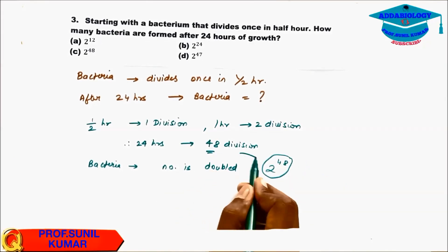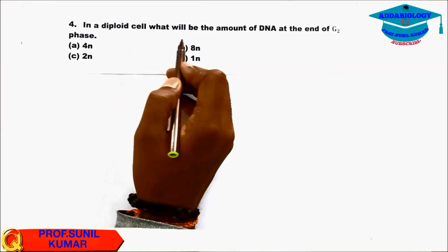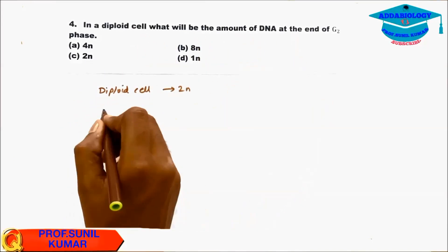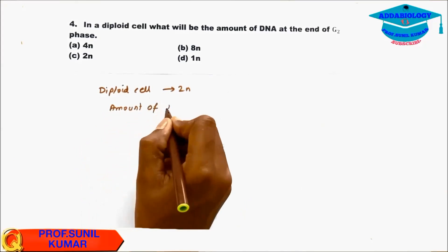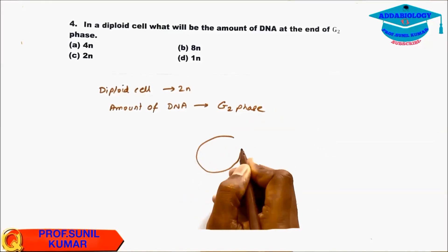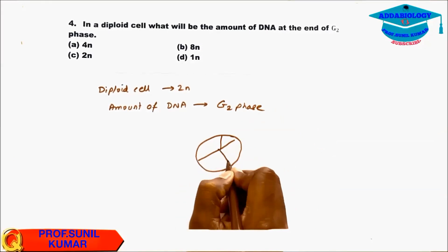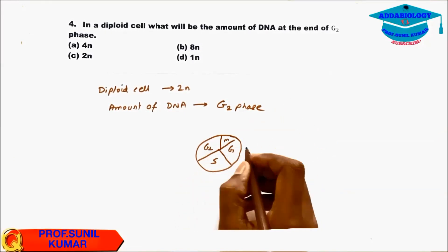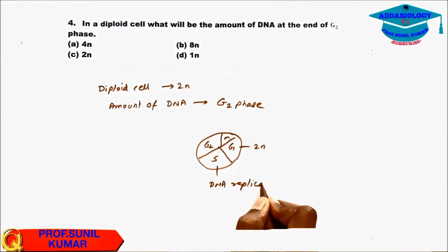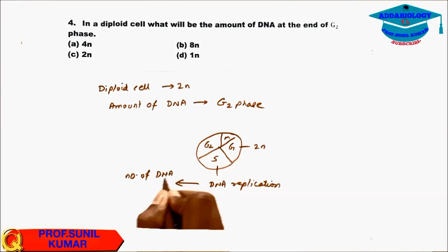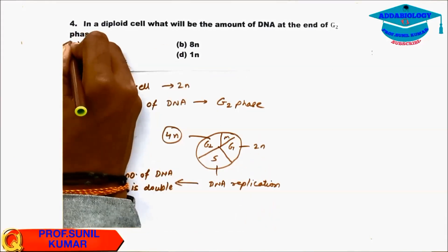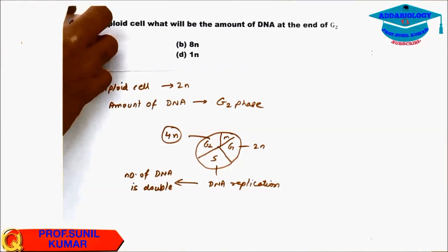Question 4: In a diploid cell, what will be the amount of DNA at the end of G2 phase? A diploid cell is 2n. At G1 phase it is 2n. In S phase, DNA replication takes place, so the number of DNA doubles. Therefore in G2 phase the DNA number is doubled, and the answer is 4n.